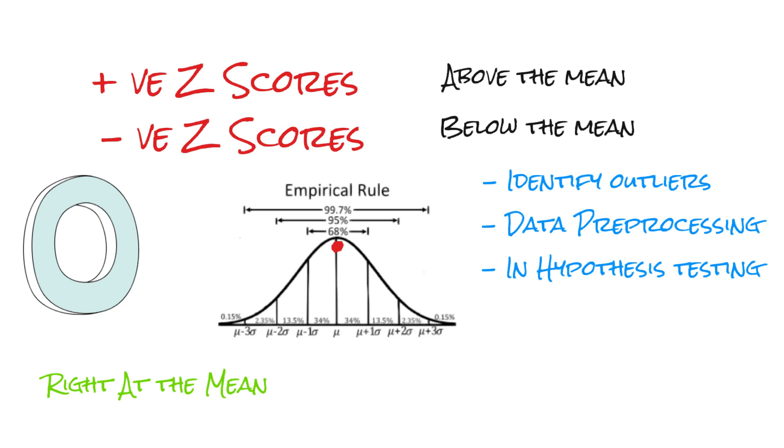To illustrate, let's consider a scenario. Imagine you have a data set of test scores with a mean of 75 and a standard deviation of 10. If a student scores 85, you can calculate their Z-score as 85 minus 75 whole divided by 10, which equals 1. This tells us the student's score is one standard deviation above the mean.